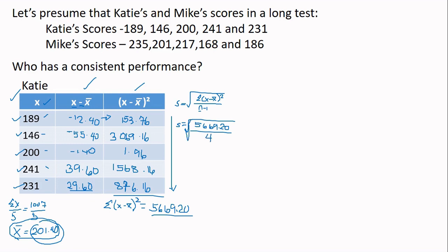We're going to write the formula first as a guide. Now, let us substitute it with the values that we obtained in the table. So this is 5,669.20 over, and here class is 5. So 5 minus 1, that is 4. So the whole numerator we take the square root. Next is to divide. So the answer here is 1,417.30. And then, the standard deviation, the square root of this 1,417.30 is 37.65. So we've solved the standard deviation of Katie's score.